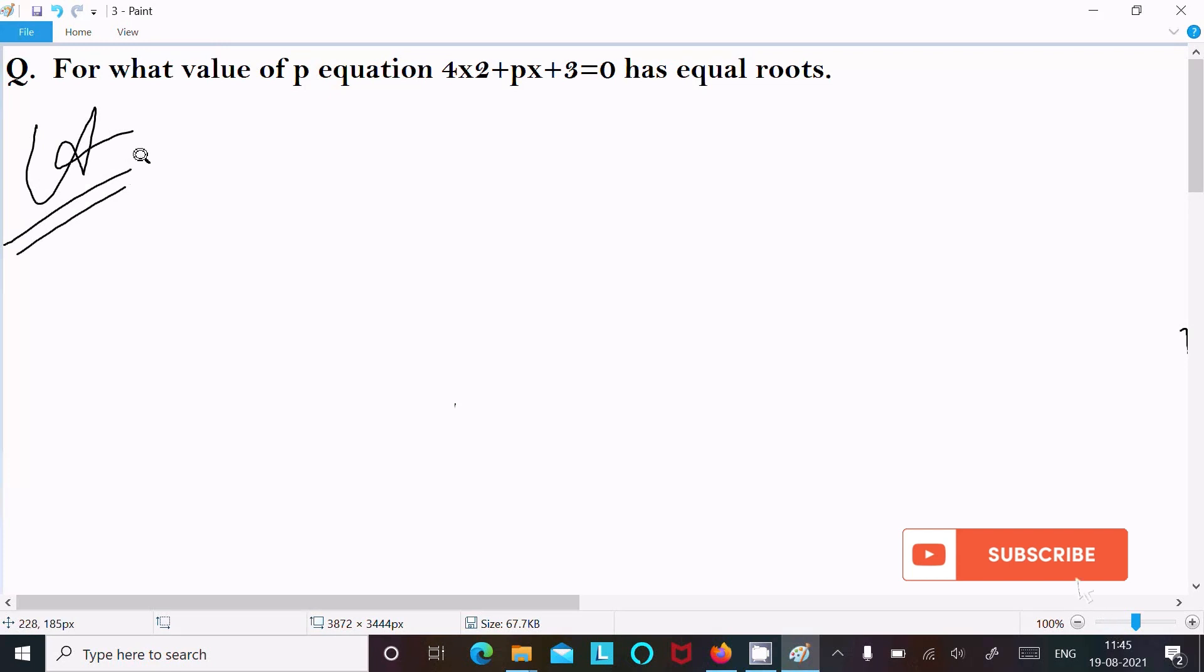First, I'm writing the given equation: 4x² + px + 3 = 0. After that, I am going to compare this with the general form of a quadratic equation ax² + bx + c = 0.